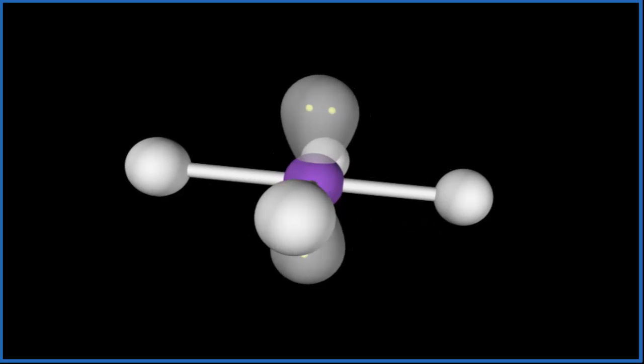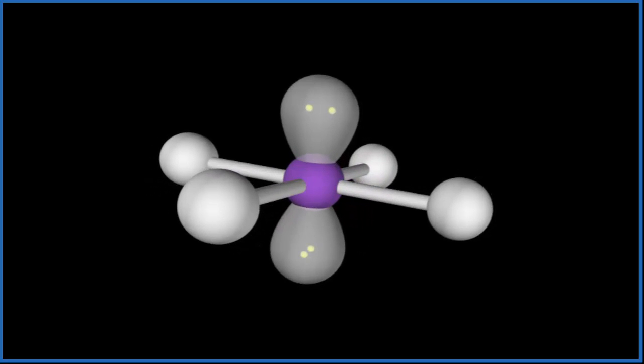If we wanted to look at the electron geometry, we'd have to take into account the lone pairs here as well, and that would be called an octahedral electron geometry.